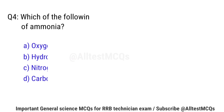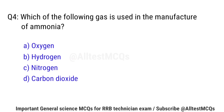Question No. 4: Which of the following gases is used in the manufacture of ammonia? Correct option is C: Nitrogen.